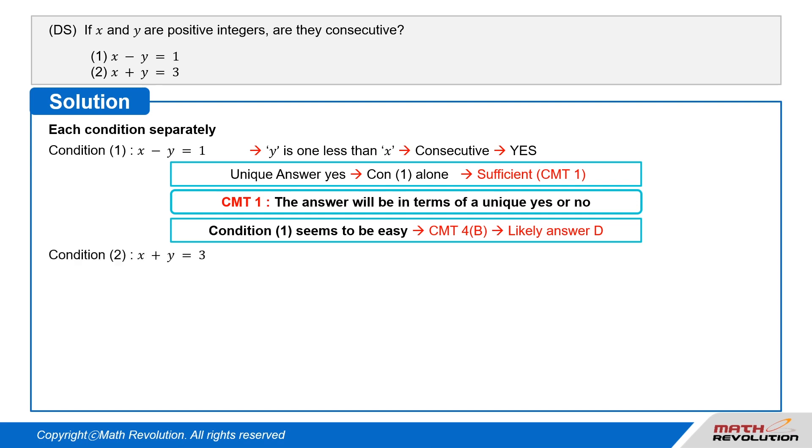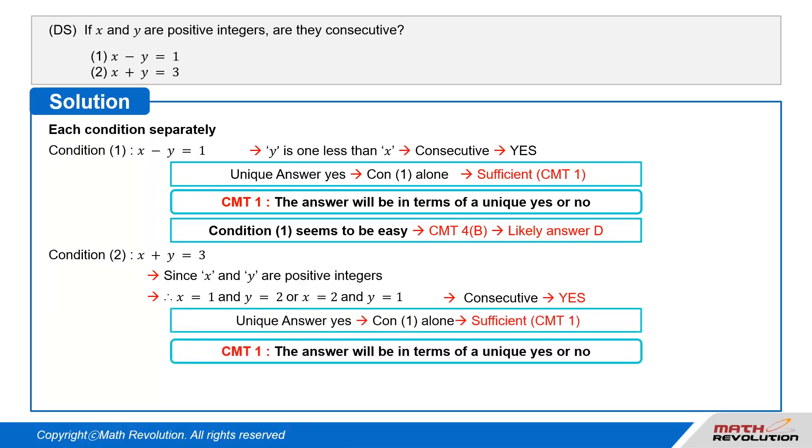Condition 2 tells us that x plus y equals 3. Now, both x and y are positive integers, so the only possibility is that they are 1 and 2. Again, x and y are consecutive. And the condition is sufficient according to CMT1, which means that the answer will be in terms of a unique yes or no.